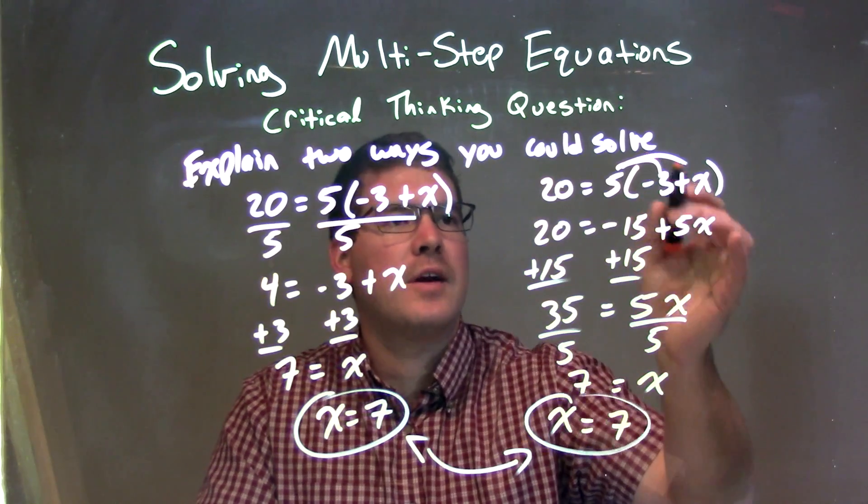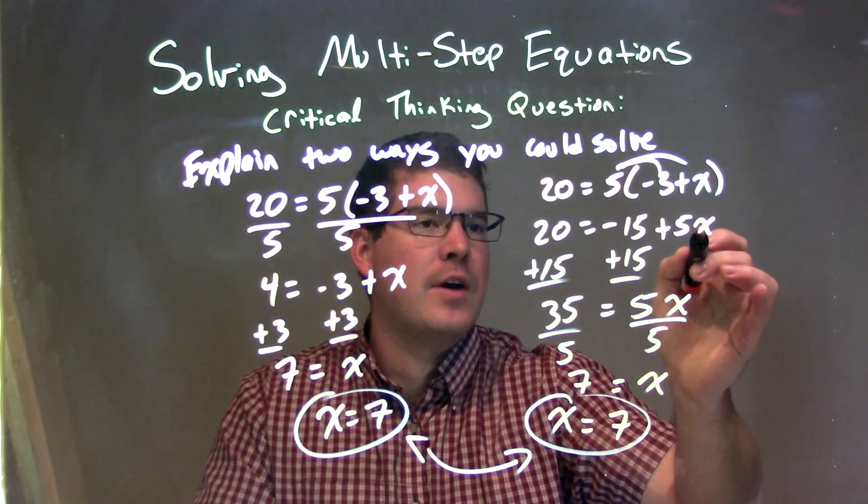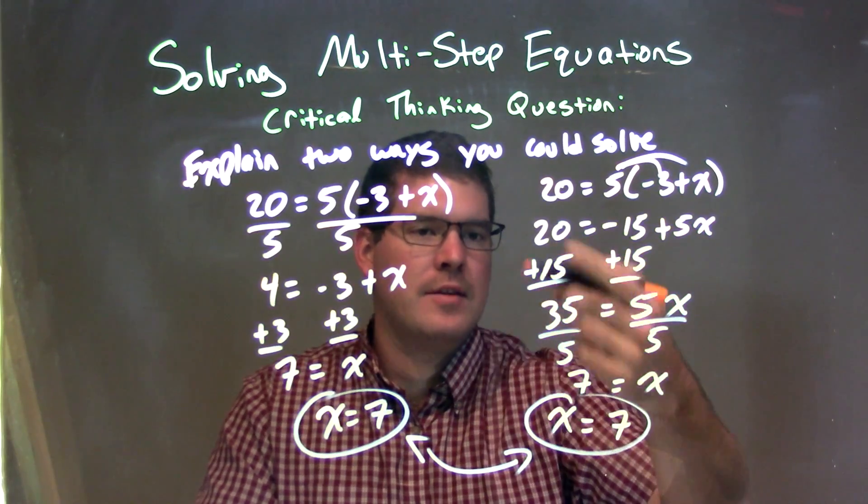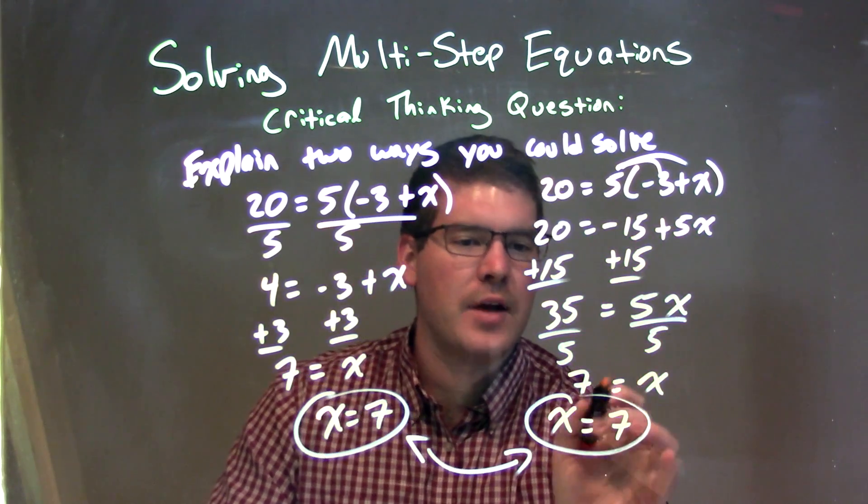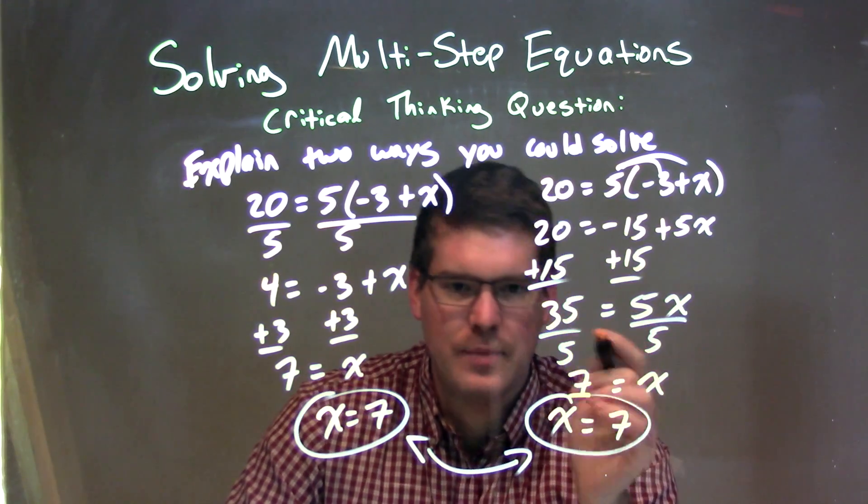The other method I did, I started out by distributing the 5. Distribute that, got -15 + 5x. Then I added 15 to both sides, get 35, divided by 5, and still got x = 7. Or 7 = x and flipped to x = 7.